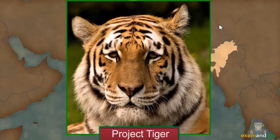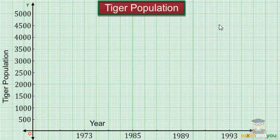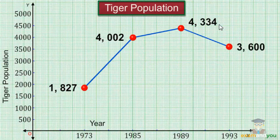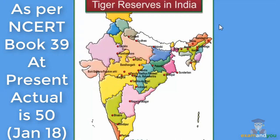Project Tiger was launched in 1973 with the aim to protect and expand the tiger population through conservation methods. Initially the tiger population increased from 1,827 in 1973 to 4,002 in 1985, and 4,334 in 1989. However, by 1993 the tiger population had dropped to 3,600. At present there are 39 tiger reserves in India.